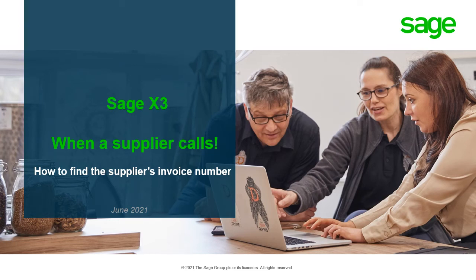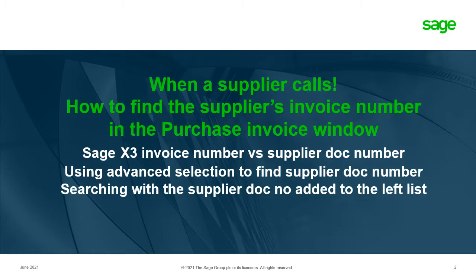Hi and welcome to the Sage X3 session: when a supplier calls, how to find the supplier's invoice number. We're going to look at what happens when a supplier calls and how to find that supplier's invoice number in the purchase invoice window screen. We'll look at the Sage X3 invoice number versus supplier doc number, using advanced selection to find the supplier doc number, and also searching with the supplier doc number added to the left list.